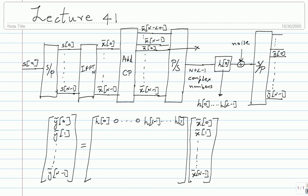The next row is a cyclically shifted version of the first row. If you do this N times, this row ends at L-1, and afterwards you have zeros. To figure out the last row, you take the first row and cyclically shift it left.